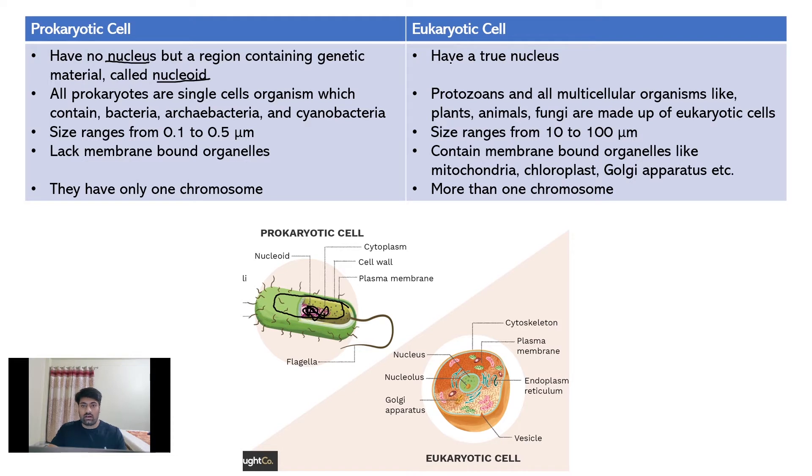In eukaryotic cells, a true nucleus is present which we can see here in the image. All unicellular organisms like bacteria, archaebacteria, and cyanobacteria have prokaryotic cells, while protozoans and all multicellular organisms like plants, fungi, and animals are made up of eukaryotic cells.